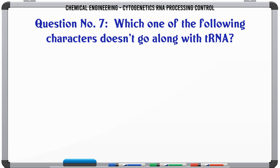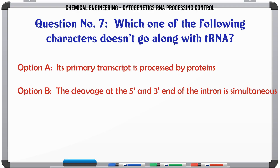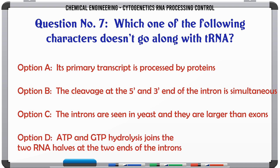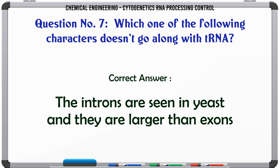Which one of the following characters doesn't go along with tRNA? A. Its primary transcript is processed by proteins; B. The cleavage at the 5' and 3' end of the intron is simultaneous; C. The introns are seen in yeast and they are larger than exons; D. ATP and GTP hydrolysis joins the two RNA halves at the two ends of the introns. The correct answer is D.